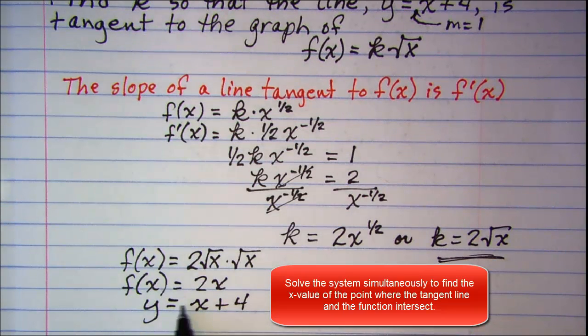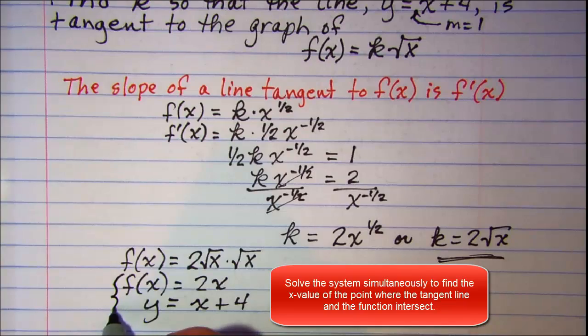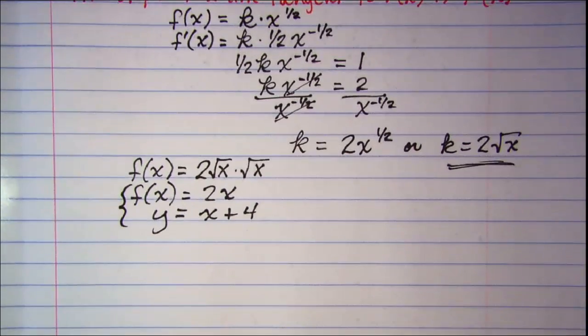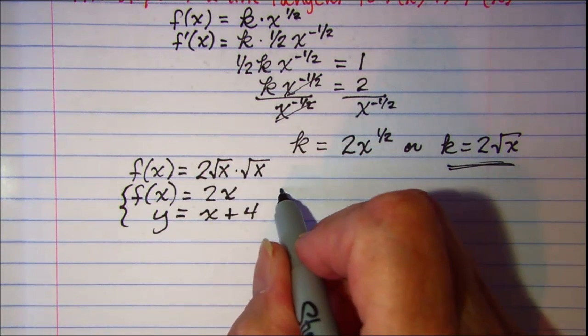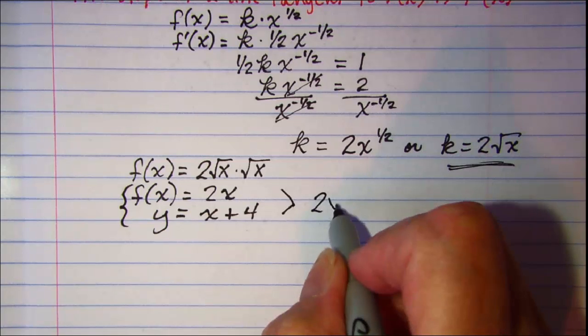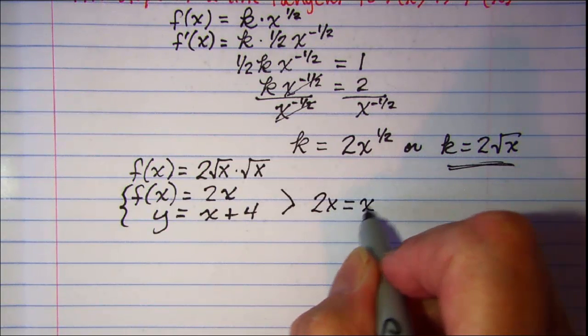I can solve these simultaneously since f of x is the same as y. I can substitute and write 2x is equal to x plus four.